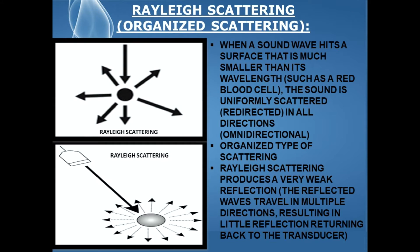Rayleigh scattering, or organized scattering, occurs when a sound wave hits a surface that's much smaller than its wavelength, such as a red blood cell. The sound is uniformly scattered or redirected in all directions — this is also known as omni-directional — and this is a very organized type of scattering.